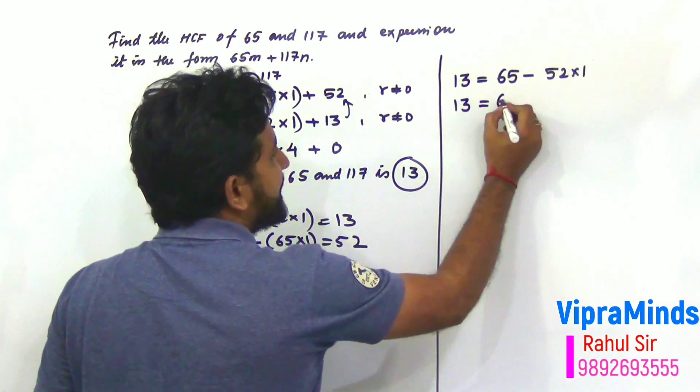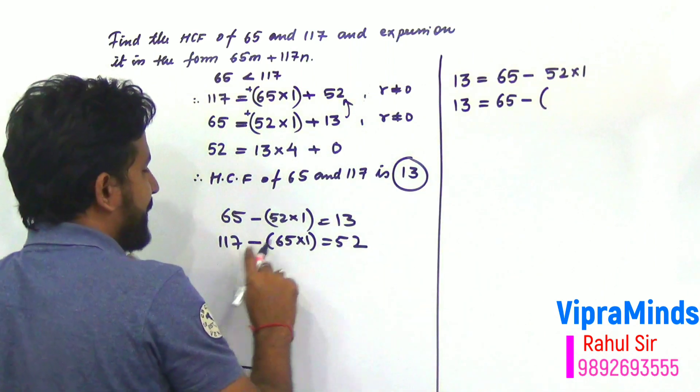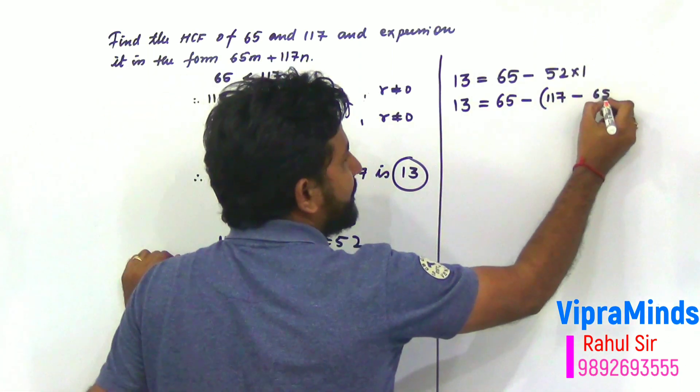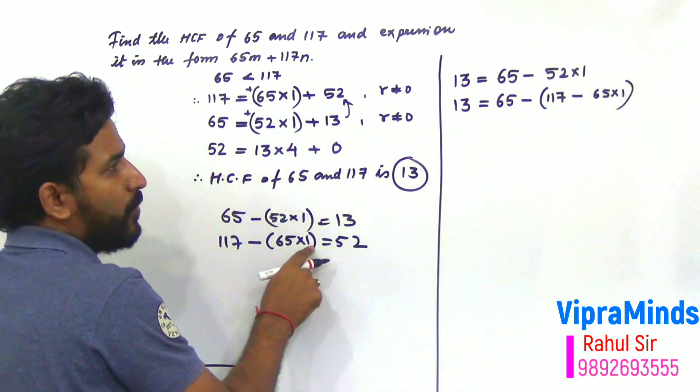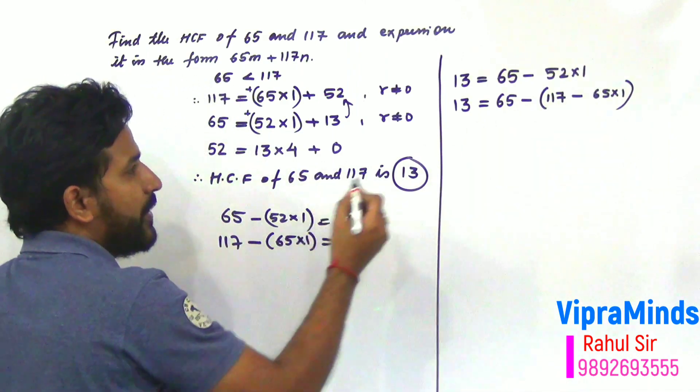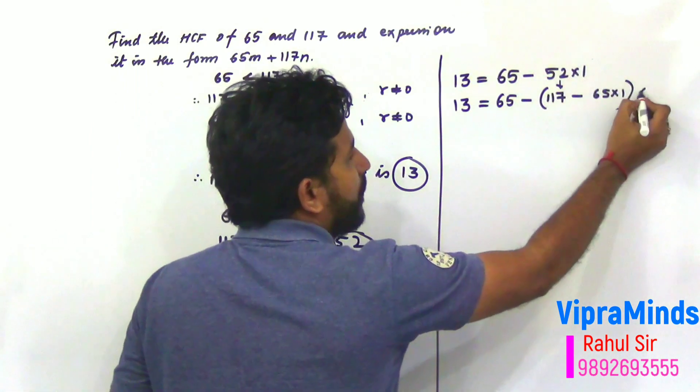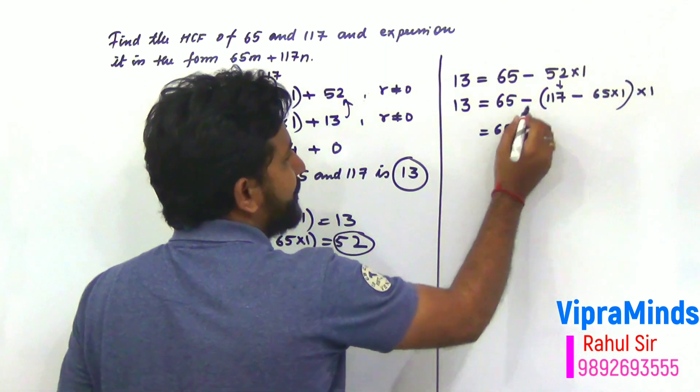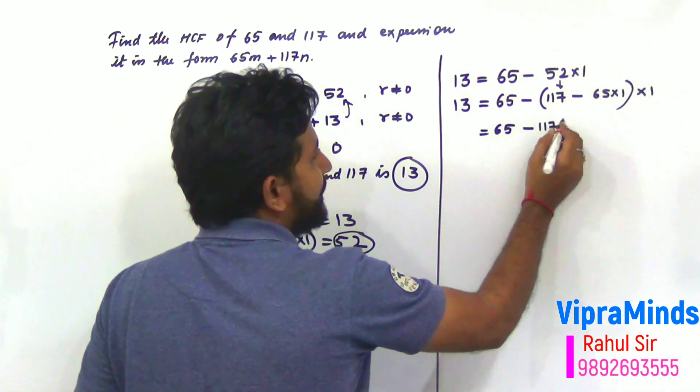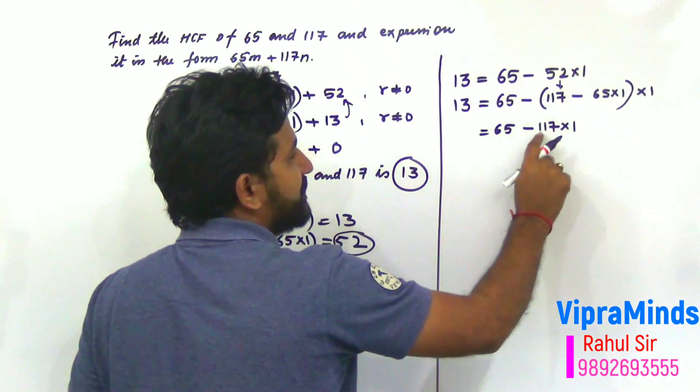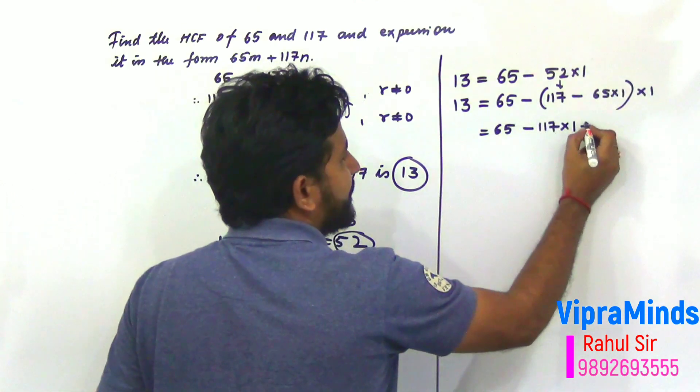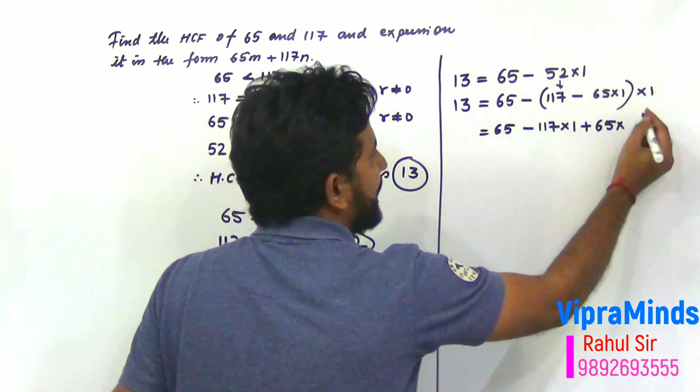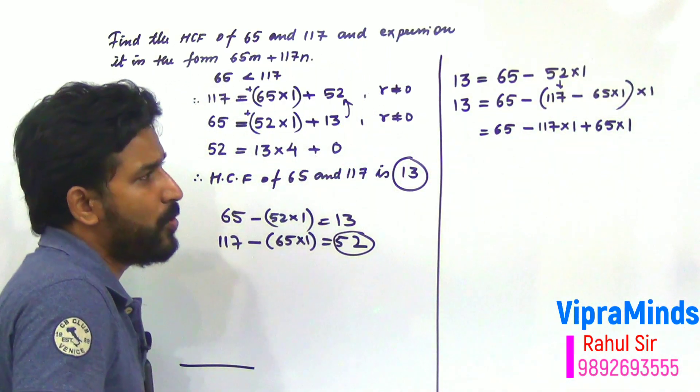So, it is 13 equals to 65 minus, now in the place of 52 I'll write 117 minus 65 into 1. 65 into 1. So, it is 117 minus 65 into 1. In the place of 52, we have written this. Into 1 into 1. Now, open the bracket. 65 minus 117 into 1, so it is 117 into 1. Minus into minus, it will be plus. 65 into 1 into 1. 1 into 1 is 1. So, it will be 65 into 1.